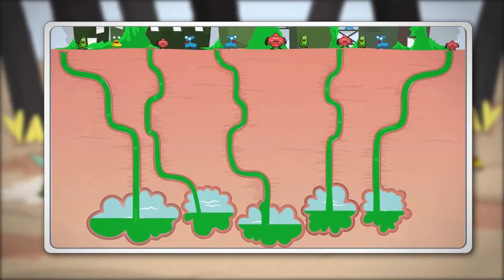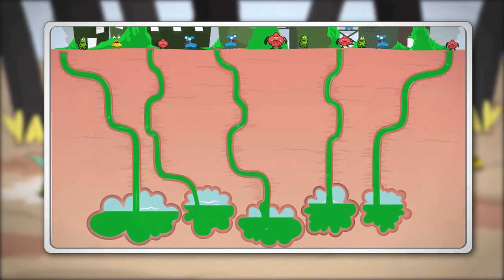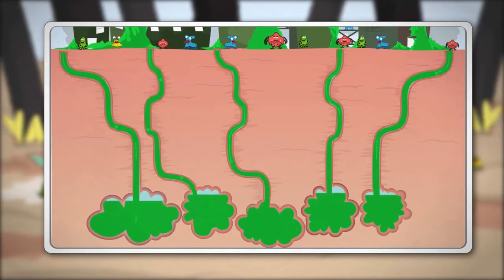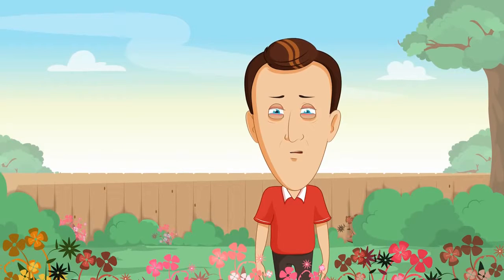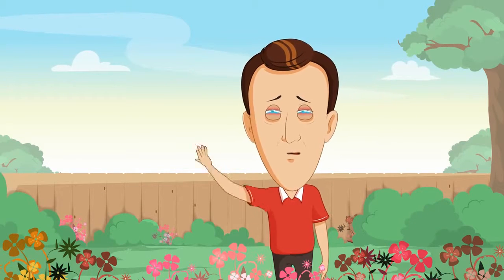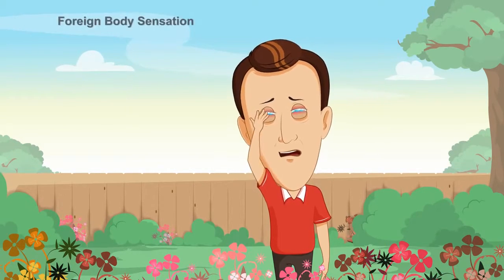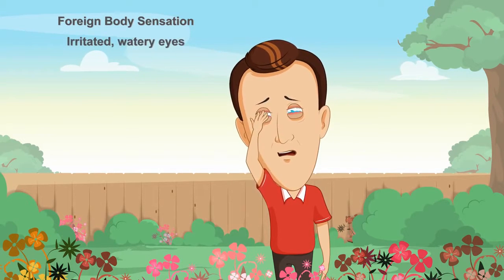Leading to malfunction of the meibomian and aqueous tear glands, the glands most responsible for good tear production. Symptoms of blepharitis range from mild to severe and include foreign body sensation, irritated watery eyes, itching, crusting.